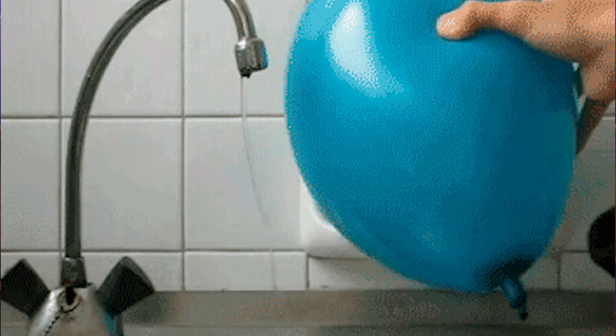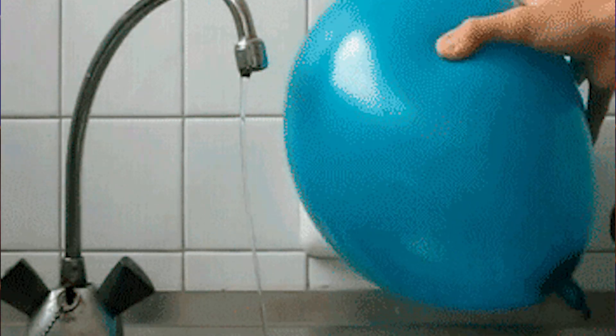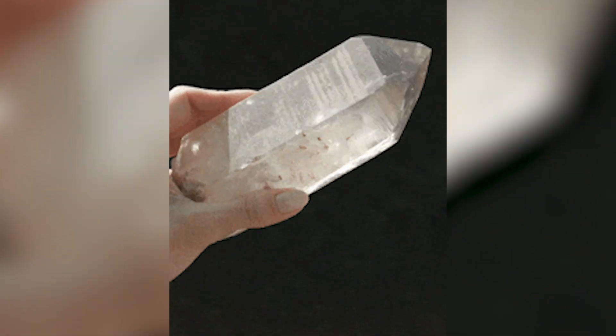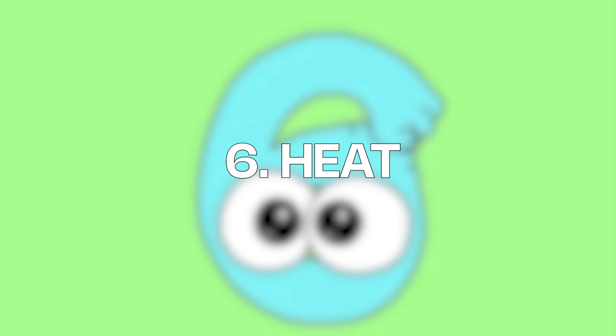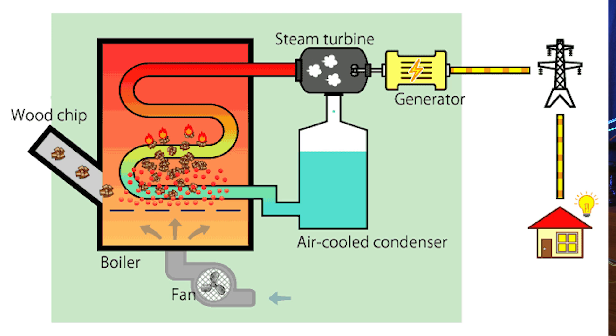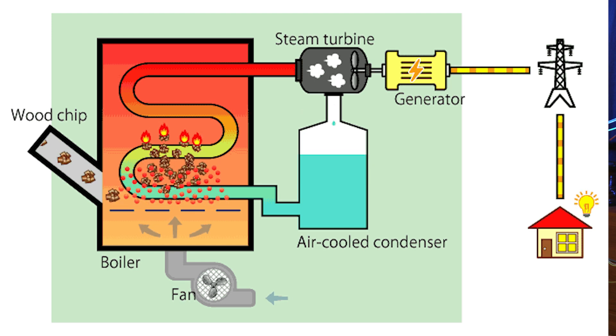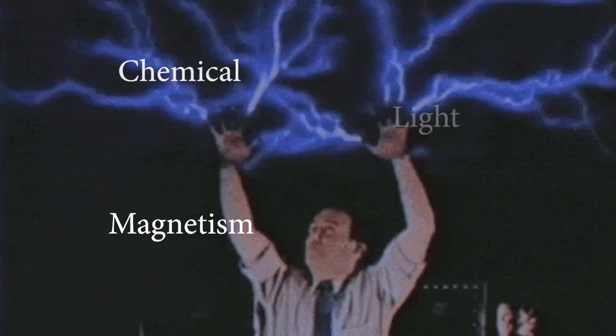Number four: friction, which produces voltage by rubbing certain materials together — that is when we feel the sting of static. Squeezing certain crystals, like quartz, produces piezoelectricity. This phenomenon is used for audio technologies such as microphones and loudspeakers. With thermoelectricity, which is present in certain materials, heat pushes electrical current. There it is — our six ways to generate electricity.